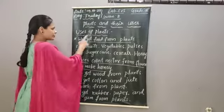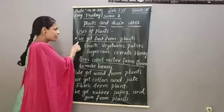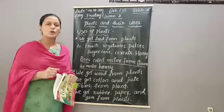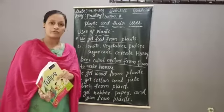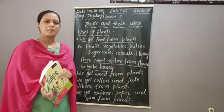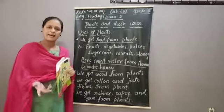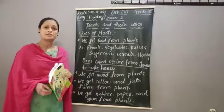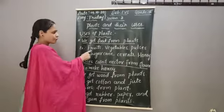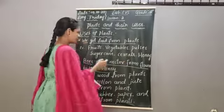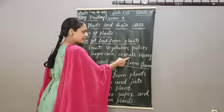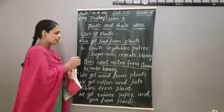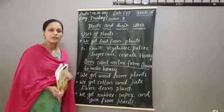Uses of plants: First, we get food from plants. We are getting food from plants like grains, spinach, vegetables, fruits, pulses, sugar, cereals, and honey. These food items we are getting from the plants.